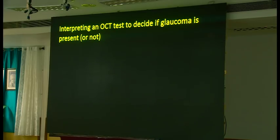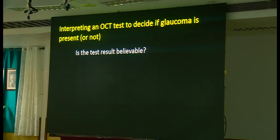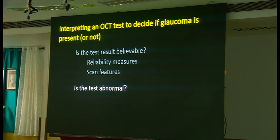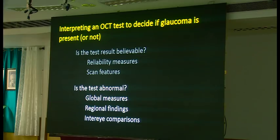You can also interpret an OCT test to decide if glaucoma is present, and I think this has a few steps. The first step is: is the test result actually believable — is this a test you're going to further interpret to decide whether there's glaucoma present? You'll want to look at reliability measures and consider specific features of the scan. Then you ask: is the test abnormal? I do that primarily using global measures, secondarily using regional findings, and finally using intra-eye comparisons between the right and left eye.